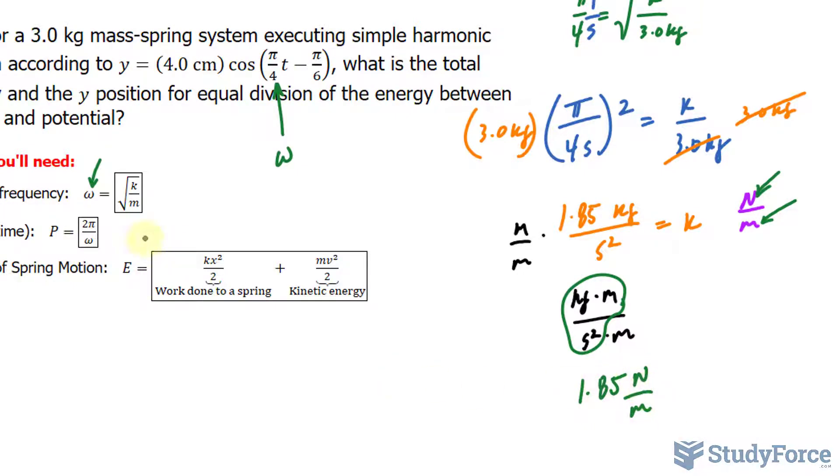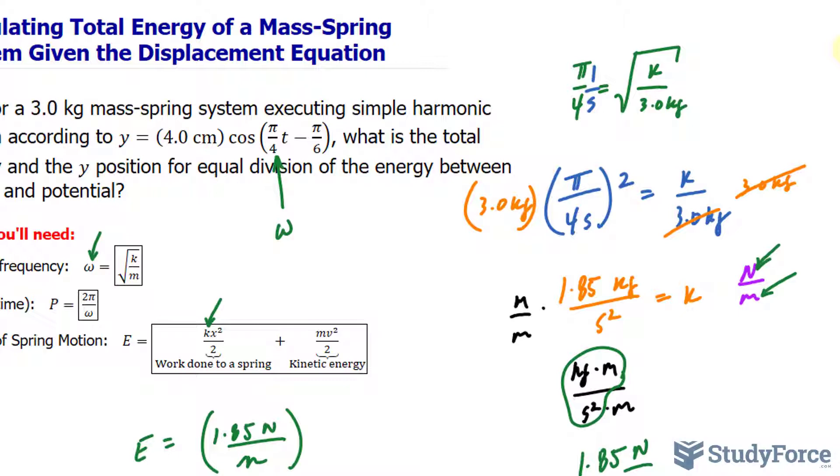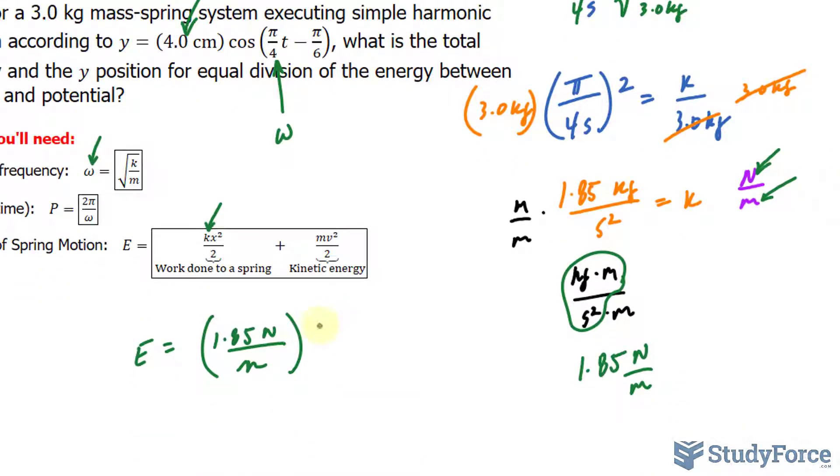Let's go ahead and substitute that value in for the formula here, where I have 1.85 newtons per meter. That will be in for k. And in for x, that's the displacement. Now we can look at the maximum of this mass-spring system, and the maximum occurs at the amplitude of 4.0. So I'll substitute 4.0 centimeters made into meters, because I don't want the units to be out of sync. That is equal to 0.040 meters.